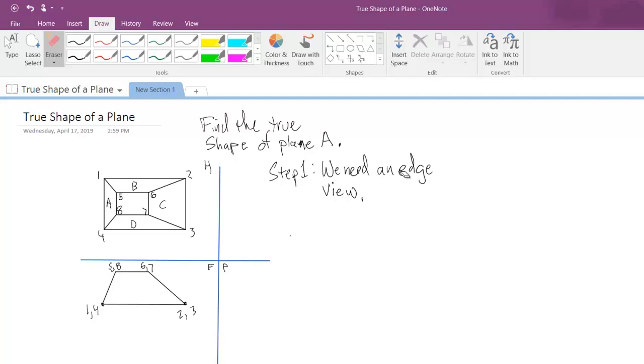So what else can I do with this? I'm trying to find the true shape. I said I needed an edge view. If you notice, plane A is defined by these points one, four, and five, and eight. Well here's one, four, five, eight - that's an edge view. So we were lucky in this particular example, we have an edge view of one, four, five, eight.